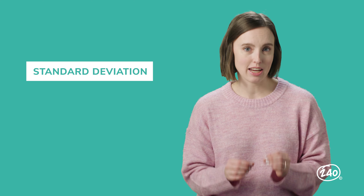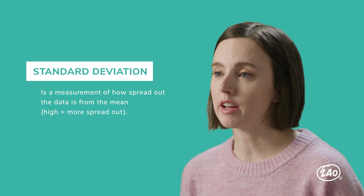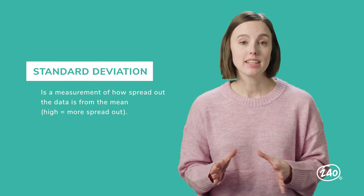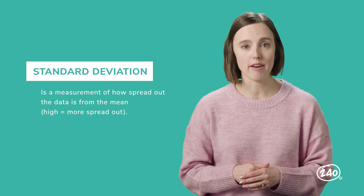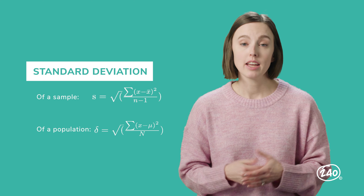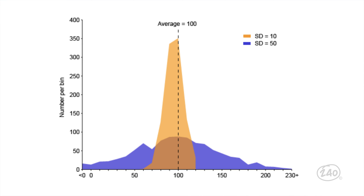Now let's zero in on standard deviation. Standard deviation is a measurement of how spread out the data is from the mean — high means more spread out. To find the standard deviation, take the square root of the variance, sample or population, whichever you have. These formulas tell us how to find the standard deviation of a sample and a population. Take a moment to jot these down if you need to. This is a visual representation of dispersion when using standard deviation to compare and contrast two sets of data. The two samples here have the same mean but different standard deviations. The orange sample has a standard deviation of 10 and the data is more compact, while the purple sample has a standard deviation of 50 and the data is much more spread out.